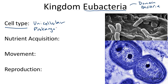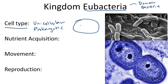Prokaryotic cells lack a cell nucleus and complex cell organelles. They are only made of a cell wall, cell membrane, cytoplasm, ribosomes, and circular DNA.